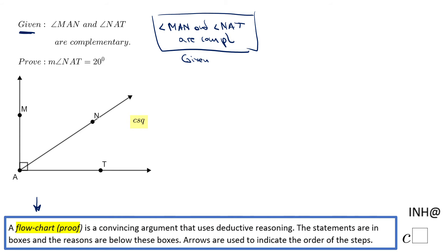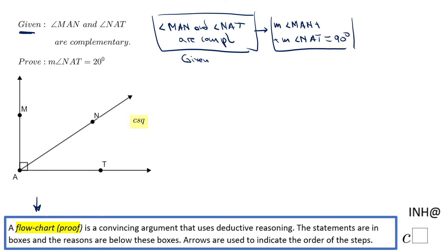My next box will be the fact that the sum of these two angles is 90 degrees, and it follows from the first statement. So the second box reads: the measure of angle MAN plus the measure of angle NAT equals 90 degrees. The logical connection between the first and second boxes — the reason — is the definition of complementary angles.